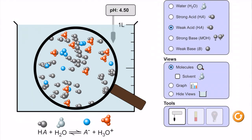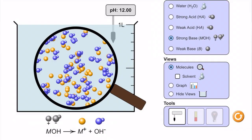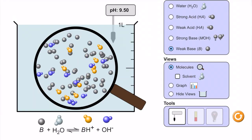Moving on to a strong base: the metal hydroxide breaks down into M+ and OH- with a single arrow to the right. In the beaker we see only ions present — completely and 100% dissociated. Our pH is 12; we are basic. For the weak base, B + H2O with double equilibrium arrows gives BH+ and OH-. The beaker shows both base molecules and BH+/OH- ions present — not 100% ionized. The pH is 9.50, a basic pH, but lower than the strong base because this is a weak base.